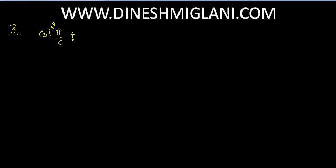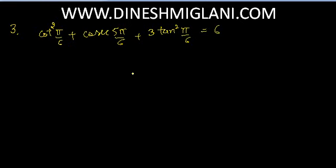Next, we have the third statement: cot squared pi by 6 plus cosecant 5pi by 6 plus 3 tan squared pi by 6. We have to show this is equal to 6.